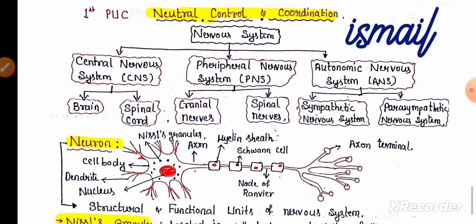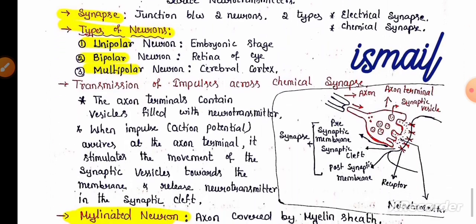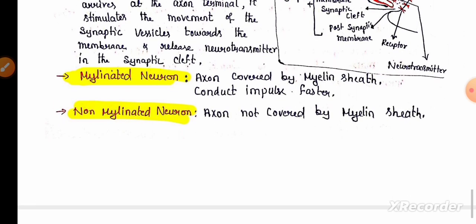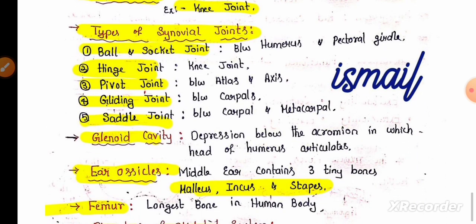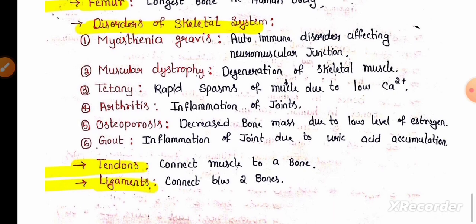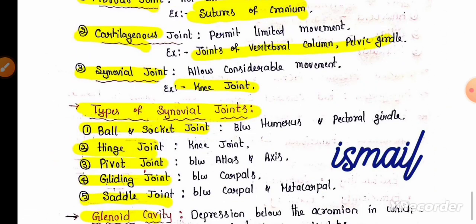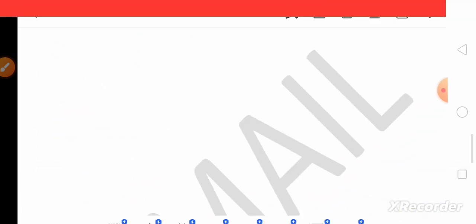Coronary artery disease and hypertension are also important. From Neural Control and Coordination, remember the classification of the nervous system, neuron diagram and explanation, types of neurons, and transmission of impulses. Types of neurons according to myelin sheath are also important. From the Locomotion chapter, remember types of joints, types of synovial joints, disorders of the skeletal system, and the difference between tendons and ligaments.